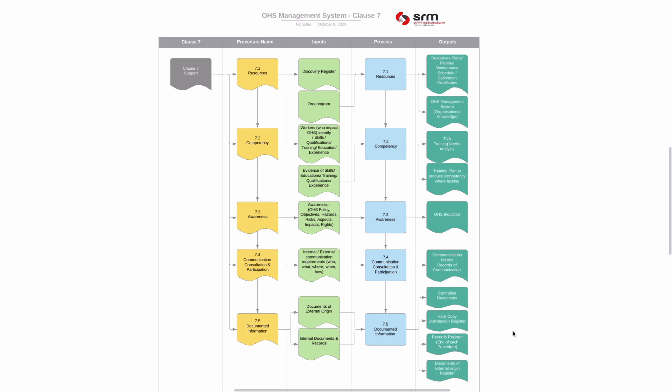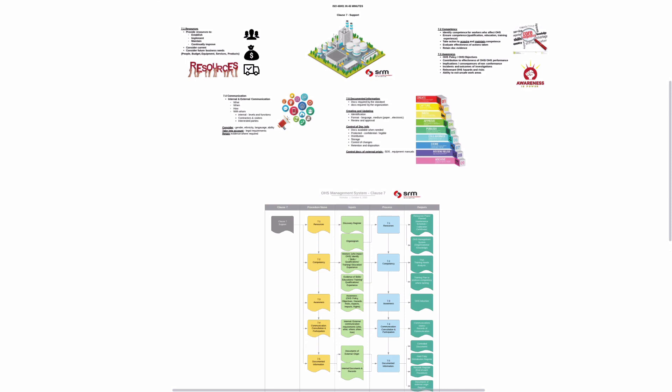So there we have an overview of Clause 7, entitled Support. Whether it's Clause 7.1 on Resources, Competency, Awareness, Communication, or Documented Information, all of those clauses are directed at supporting your OSH management system to achieve its intended outcomes. We hope you enjoyed this episode — hit the subscribe button if you'd like to receive more information on compliance and ISO management systems.